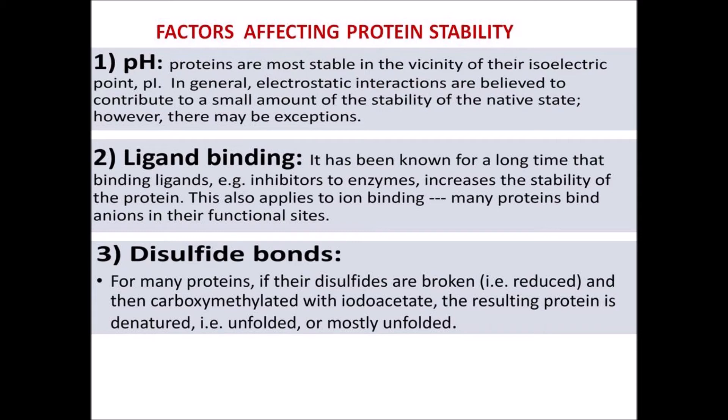The third factor is disulfide linkage. For many proteins, if their disulfides are broken — that is, reduced — and then carboxymethylated with iodoacetate, the resulting protein is denatured, meaning unfolded or mostly unfolded.